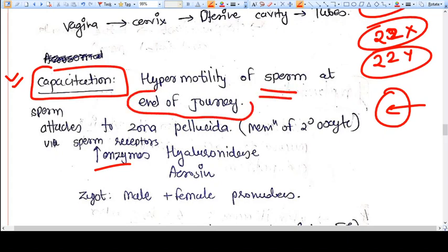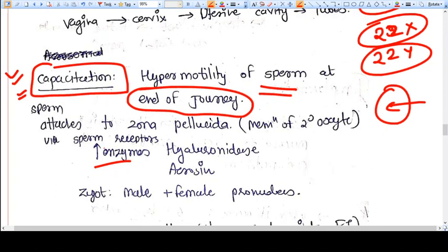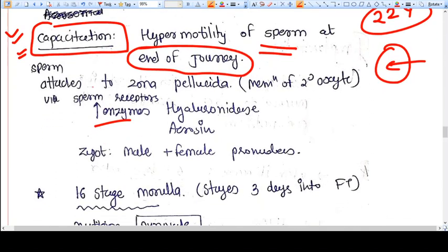Capacitation is hyper motility of sperm at the end of the journey. That means when they reach the ovum, they get hyper motility. Sperm attaches to the zona pellucida.